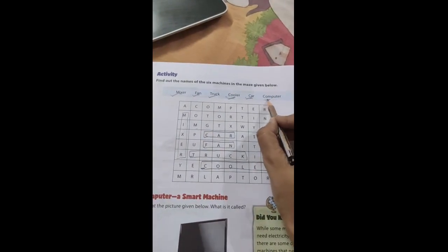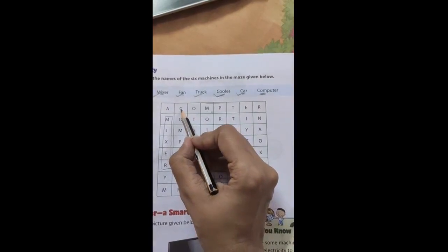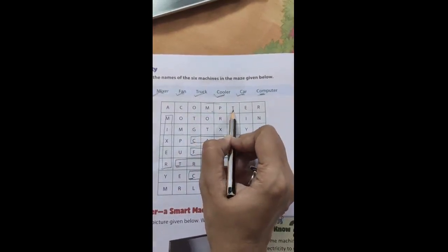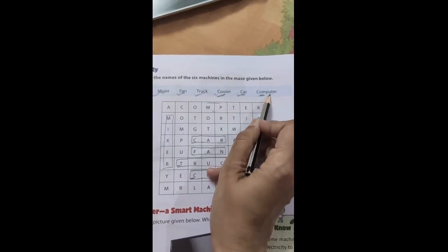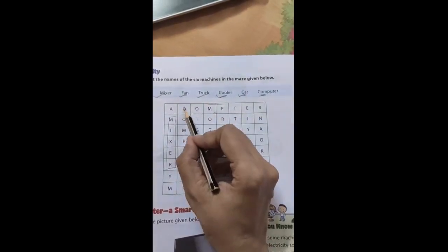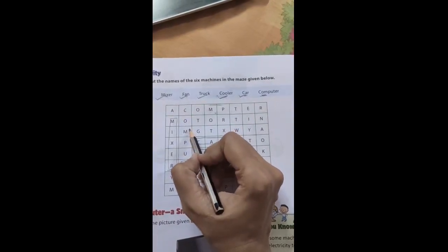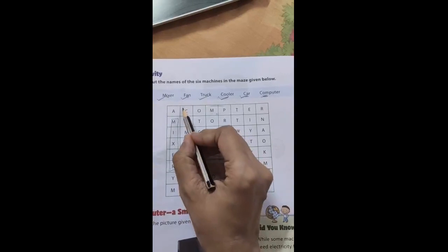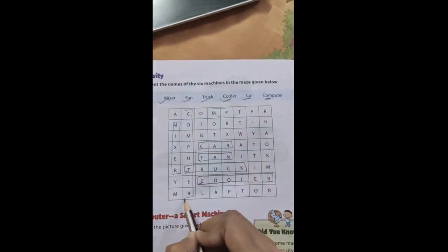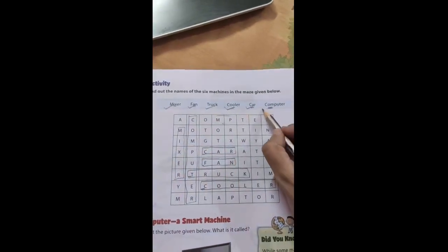Now the last word is computer. Here in first row we are getting C, but here O-M is correct, but after P we are not getting U over here, which is the alphabet in the spelling of computer after P. Next, let's see. Next row, yes. Here we are getting C-O-M-P-U. Yes, we got it. C-O-M-P-U-T-E-R. Computer. So here we go, and we got all our six machines.